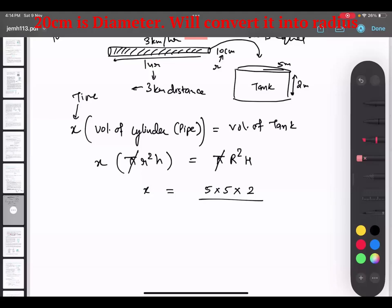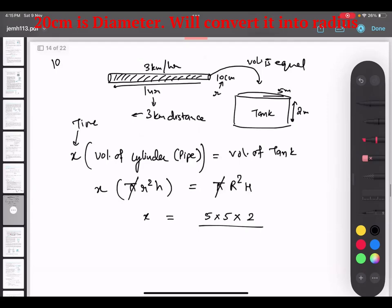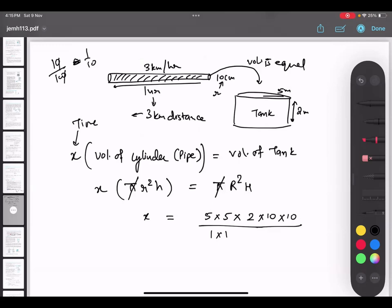So over here, 10 centimeter divided by 100 is 0.1, or I can say 1 upon 10. Is this thing clear? Yes. So 1 into 10 into 1 into 10. Got it? Yes. And height was 3 kilometer, which is 3000 meter. Everything is in meter now.